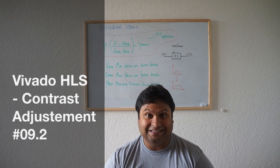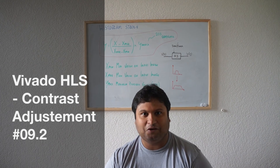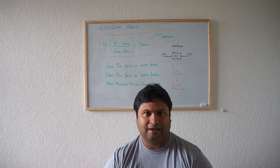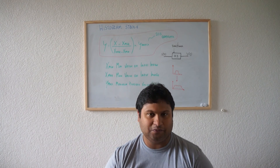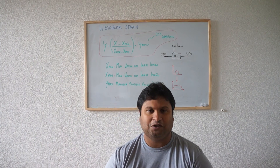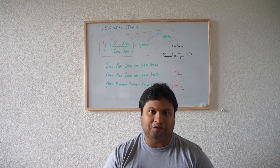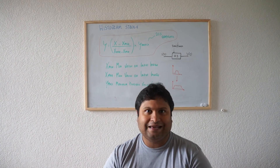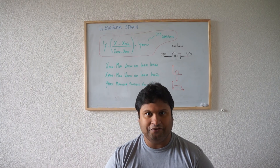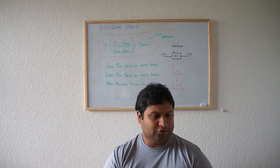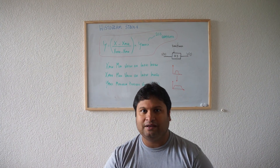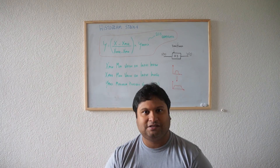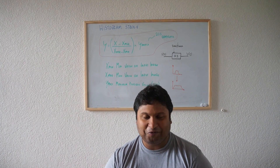Hello guys, in this video we're going to learn how to implement the contrast adjustment IP core in Vivado HLS. Last time we learned how to do the histogram, and today I'm going to show how this algorithm works. I'll show some stuff in MATLAB as well, then we jump to Vivado HLS and write our algorithm. There is also a third video where I will show how to merge all these IP cores into the ZBoard, and you guys can compare how fast it becomes doing the same image processing algorithm in software versus hardware.